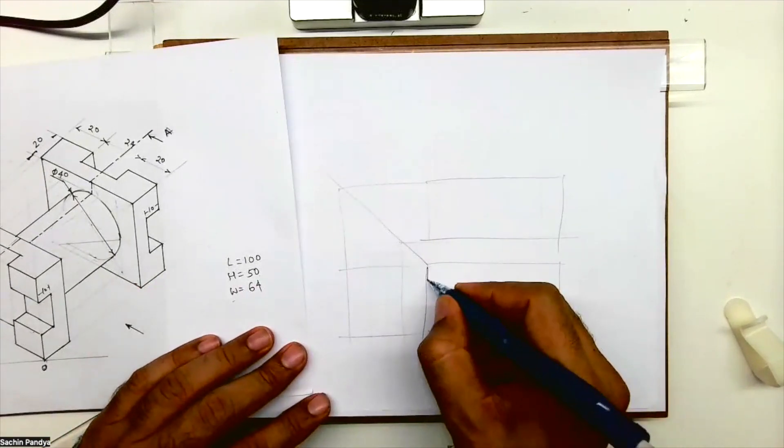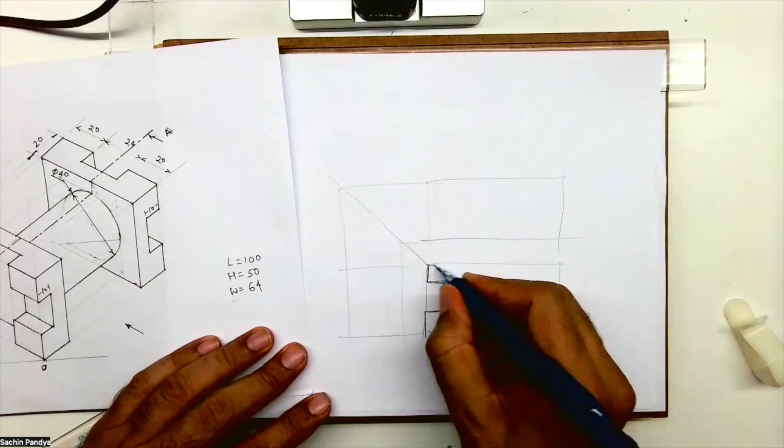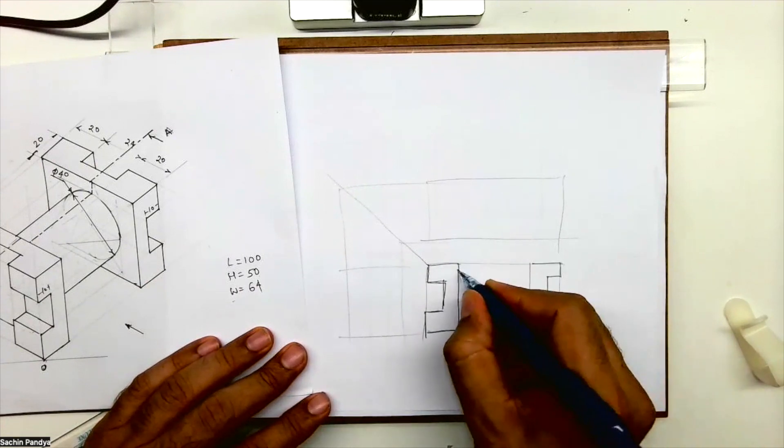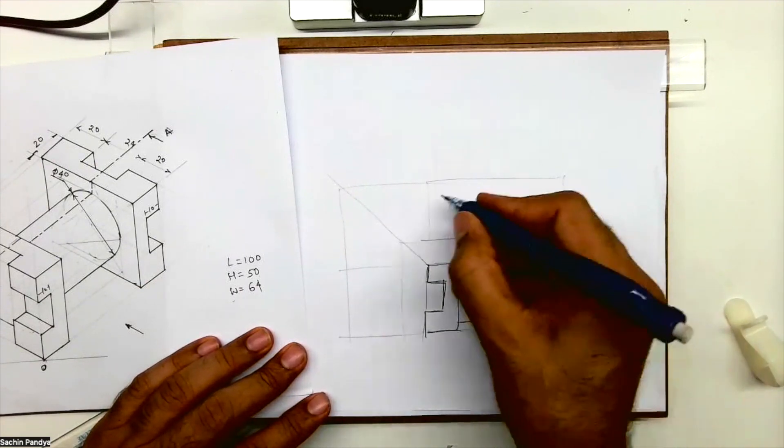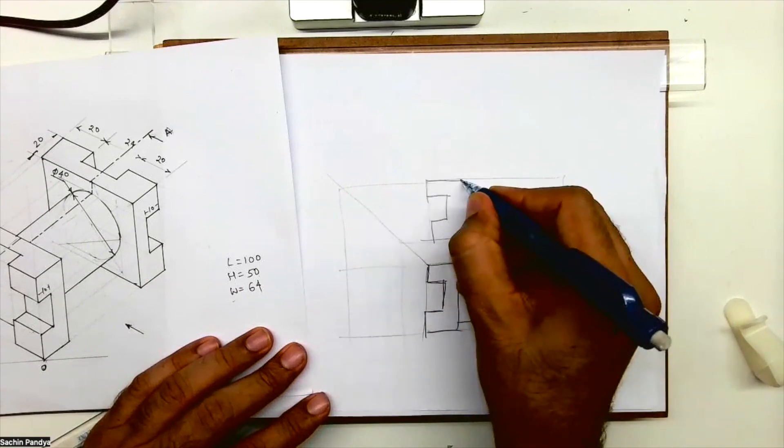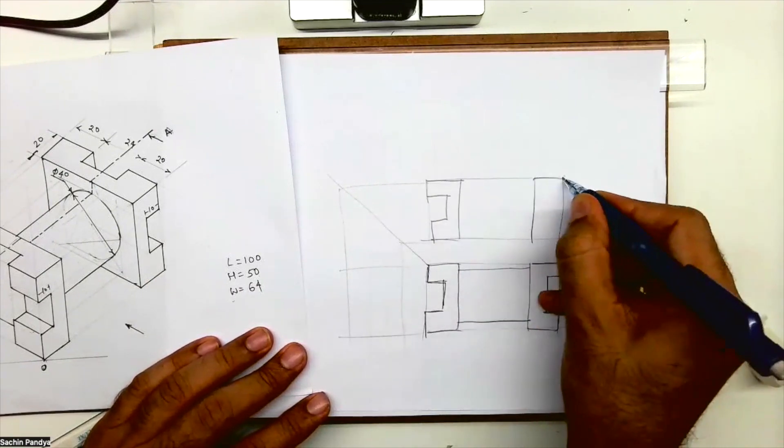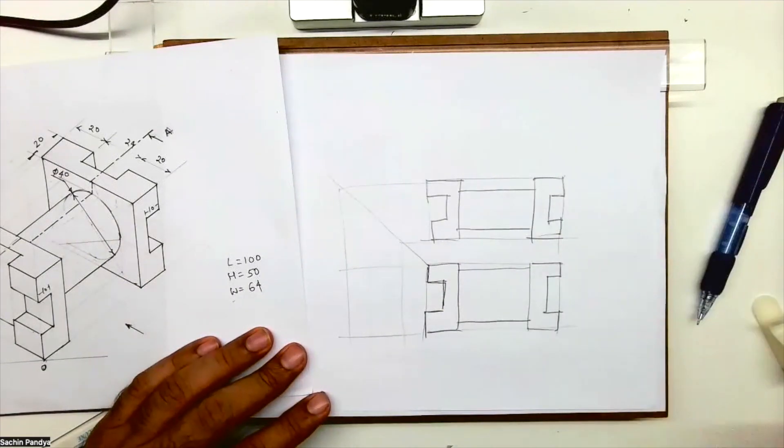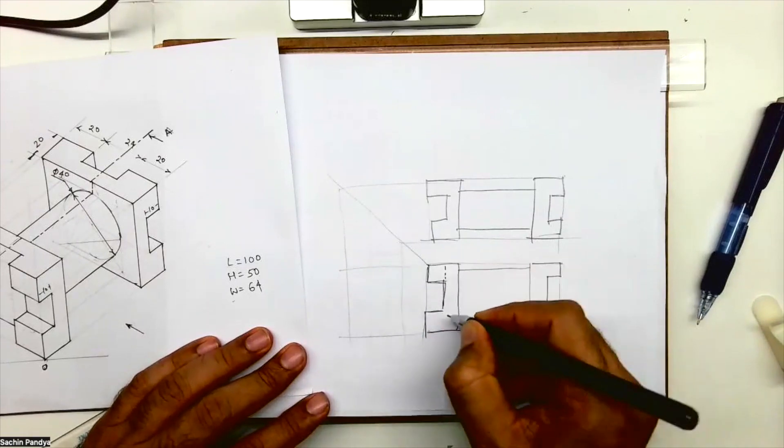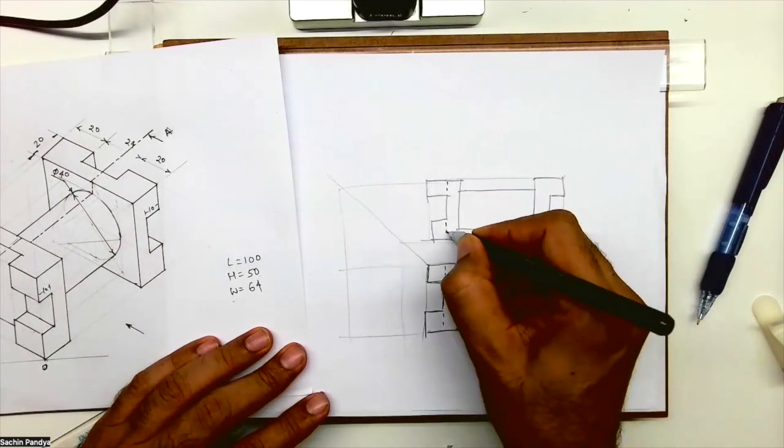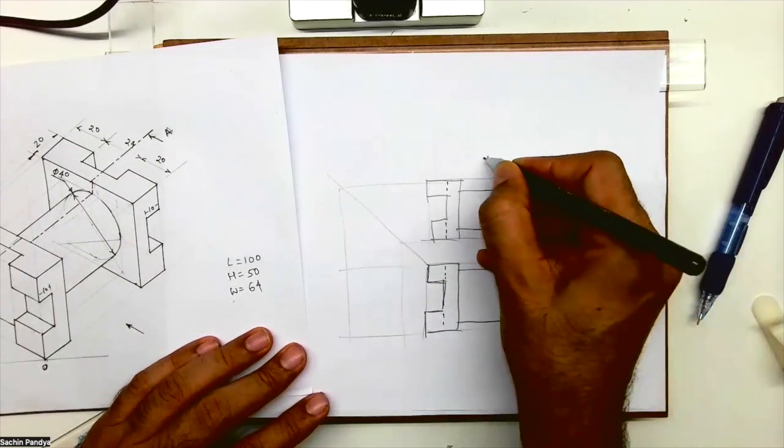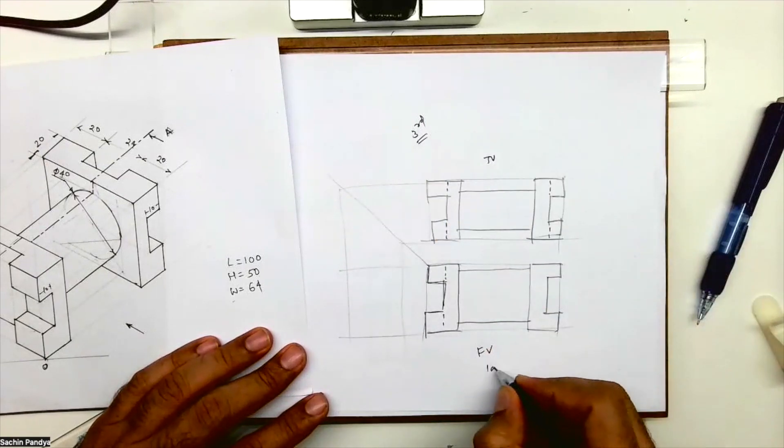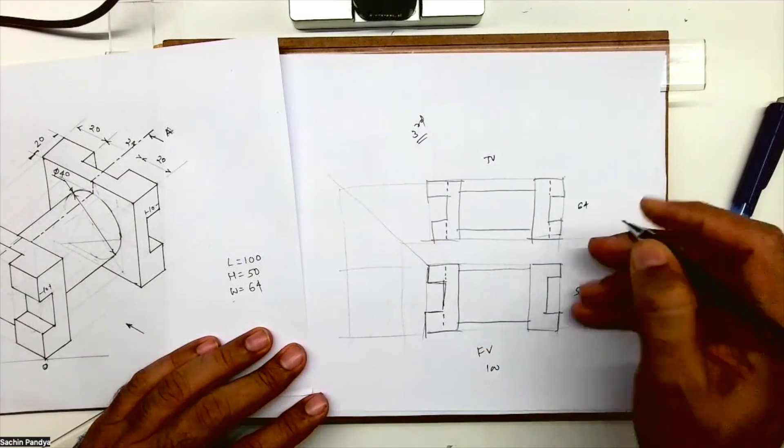In front view, you draw this way. In top view, dotted lines are behind. This is top view, this is front view. We are doing in third angle, so in third angle it's like this. Same way - length 100, height 50, width 64. Width will go up.